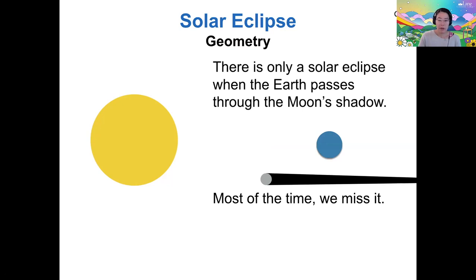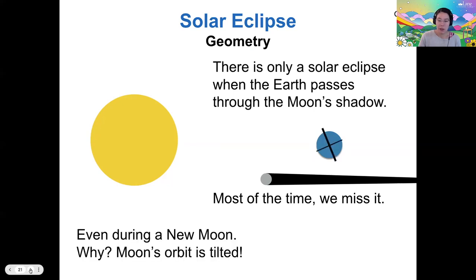So why is that? If the shadow of the moon misses earth, then we won't get one. Why would the shadow of the moon miss earth? Because the moon's orbit is tilted.